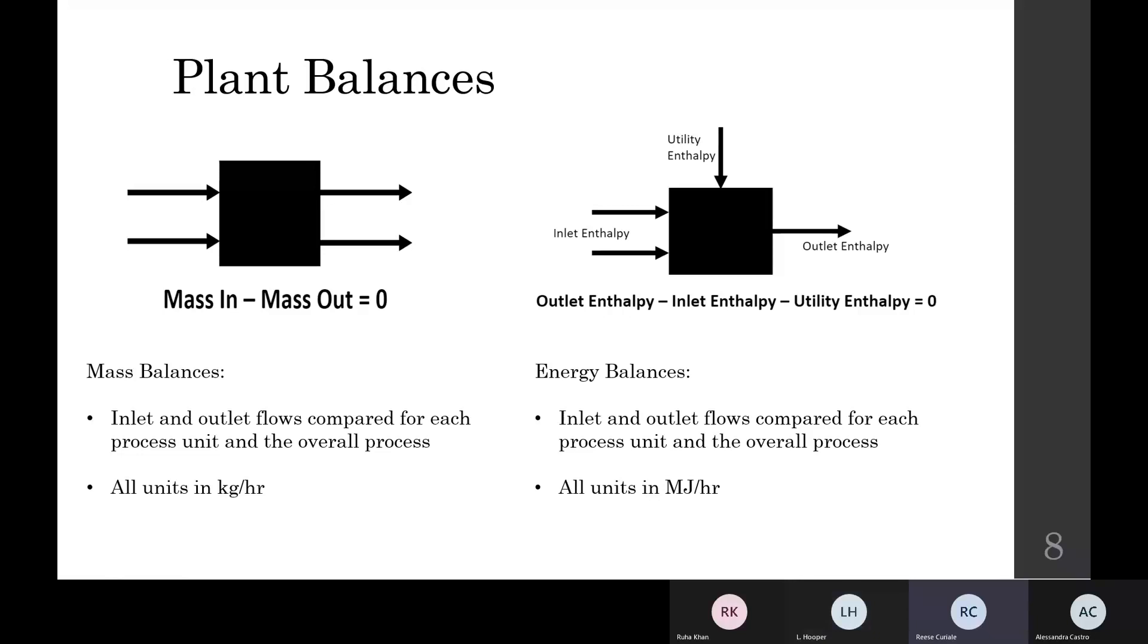In order to ensure that our design was created both reliably and accurately, it is important to ensure that both the mass and energy balances are accurate throughout. Using the stream tables generated from our Aspen Plus simulation software design, we were able to determine both the inlet and outlet flows of mass and energy to the individual process units. To satisfy the laws of mass and energy conservation, the amount of material and energy entering a process unit is required to balance with the amount leaving.